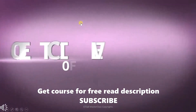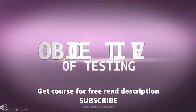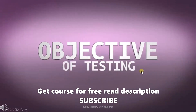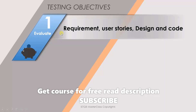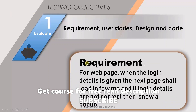We'll now talk about something new: the objectives of testing. The first objective of testing is to evaluate requirements, user stories, design, and code. Suppose we have been given a requirement — according to this objective, we have to evaluate it to see if it has all the information we need for our implementation.